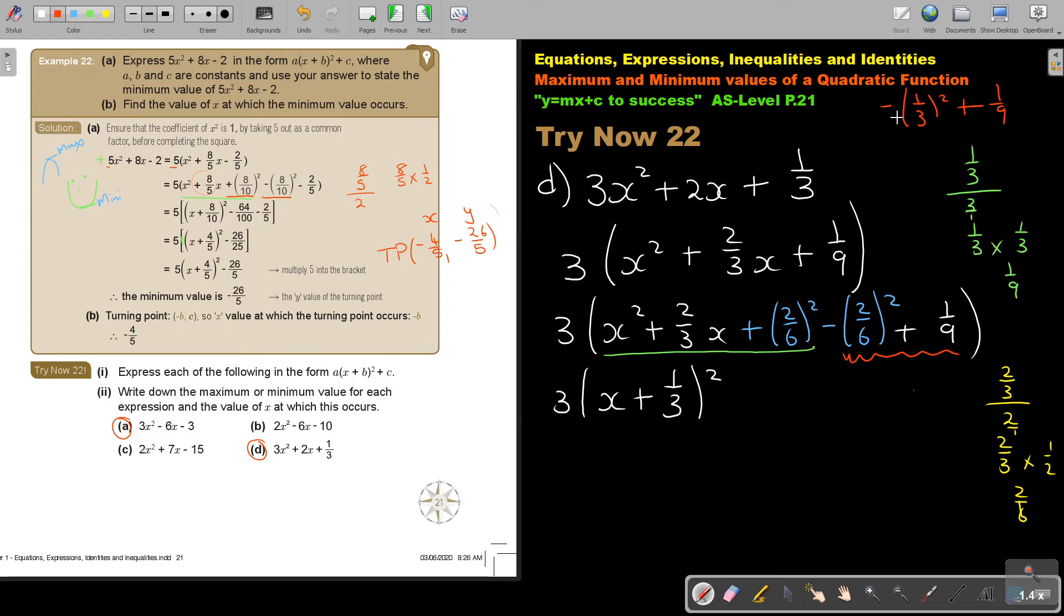But, 1 times 1, it's negative 1. 3 times 3 is 9. Can you see what happens? So, basically, it's going to be minus 1 over 9 plus 1 over 9. And then, it's going to be 3, x plus the third squared plus 0. So, therefore, this was now the first one. The second one.